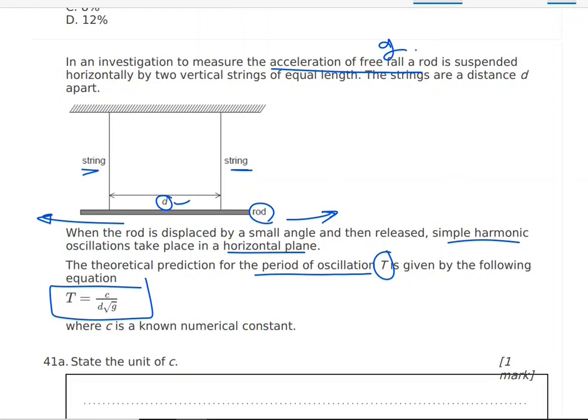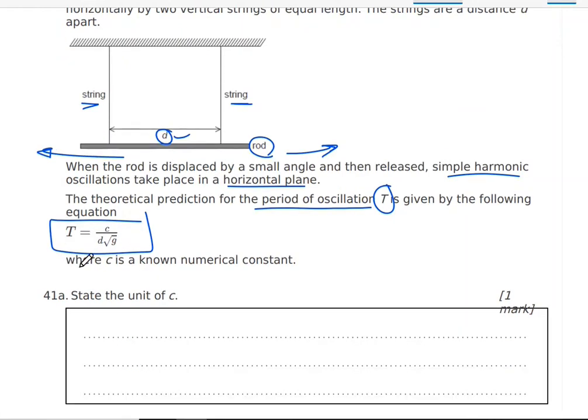State the unit of this constant C. Always the unit from the formula. Now, T is time. So I need the unit for C. So C from this equation, we're going to do cross multiplication. C equals T times D times square root of G.